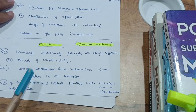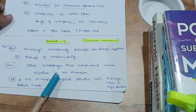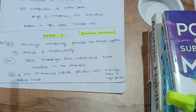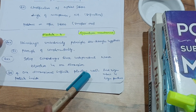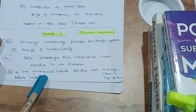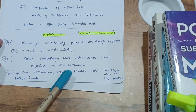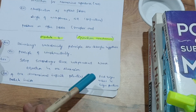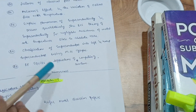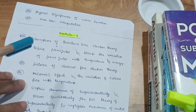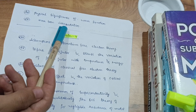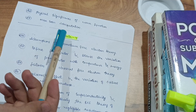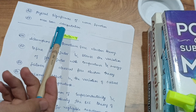Setting up Schrödinger's time-independent wave equation in one dimension is one of the most important questions from module two. Also very important is the particle inside a one-dimensional infinite potential well, from which questions on finding eigenvalues and eigenfunctions will be asked. Additionally, focus on the physical significance of the wave function and Max Born's interpretation.